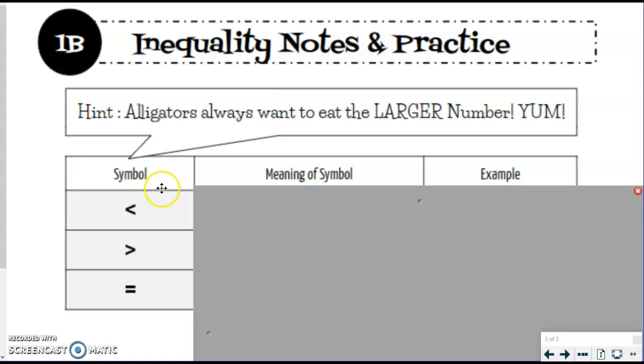So when we use inequalities, we're talking about these symbols right here. And the hint that a lot of people use to remember these is called the alligator. Picture like an alligator or something like that. And alligators always want to eat the larger or greater number. Yum, because they're so hungry. So you can picture it like a mouth.